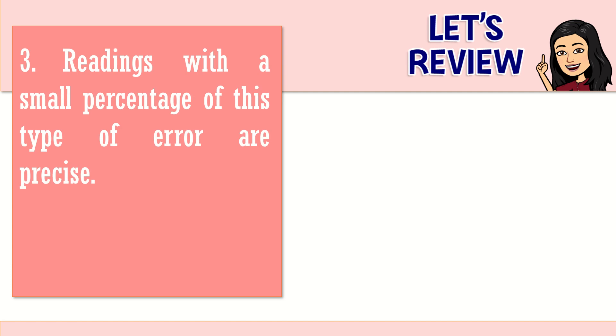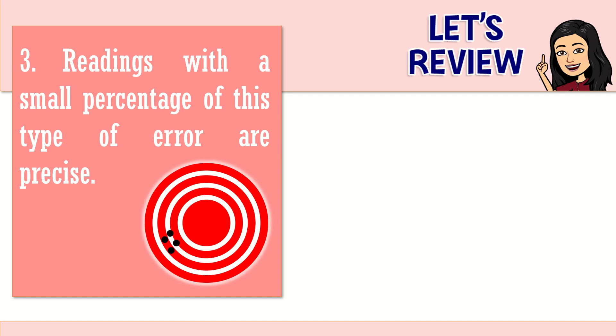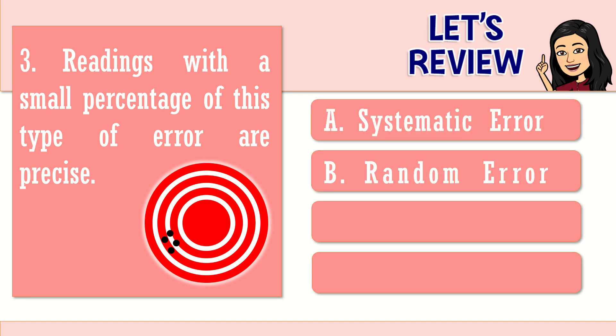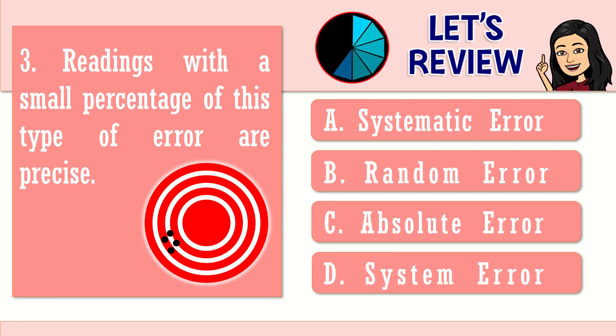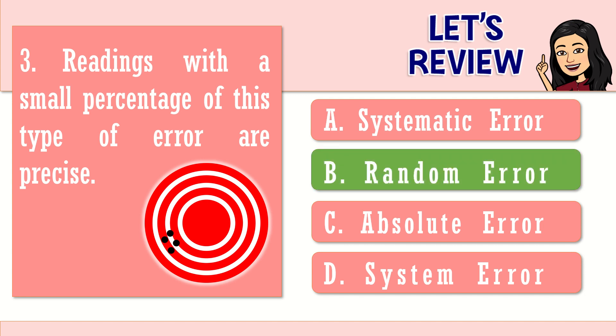Third and last question. Readings with a small percentage of this type of error are precise. A. Systematic error. B. Random error. C. Absolute error. Or letter D. System error. You've got 5 seconds. Your time is up. The right answer here is letter B. Random error. Very good. When we say readings having a least or a small percentage of random error, we say that those readings are precise. But doesn't necessarily mean that those readings are accurate. So far so good. That ends our review.